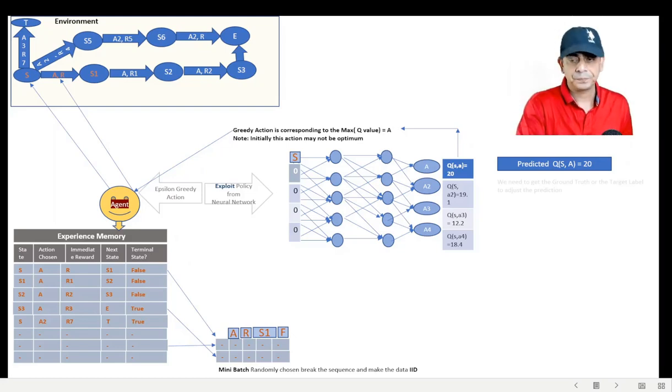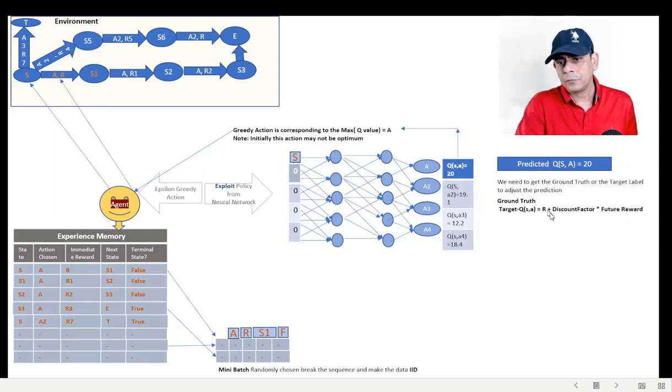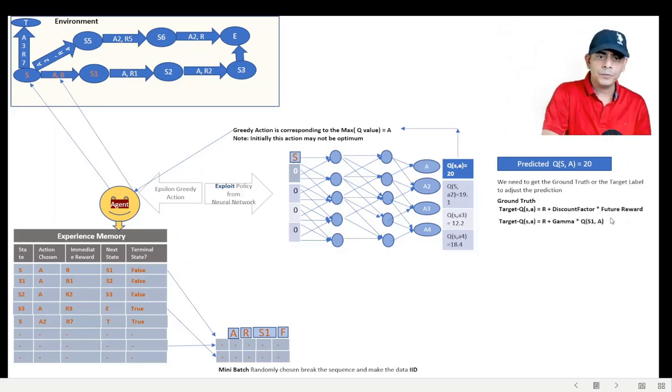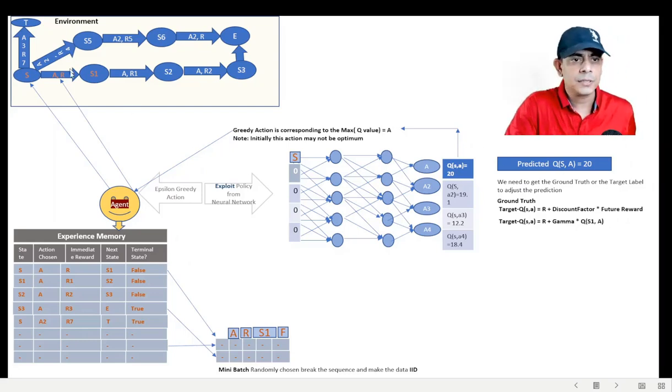Like generating the experience memory, we are going to calculate and generate the target data, the label data or the ground truth. The ground truth, as we know, is the Q-value. The actual Q-value can be calculated by applying this formula, which is the basic of RL. The formula says that you have to apply the immediate reward, a discount factor multiplied by the future reward. Now what is future reward? Future reward is the reward which is coming from this value, which is taking the state and action S1A - that's the future reward.